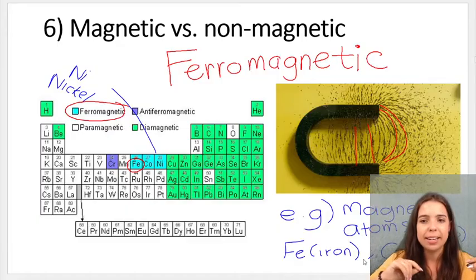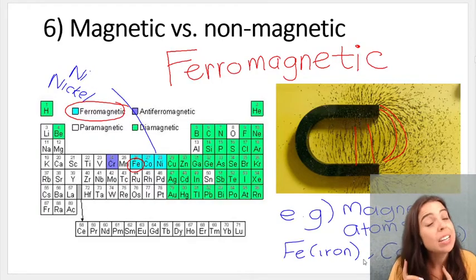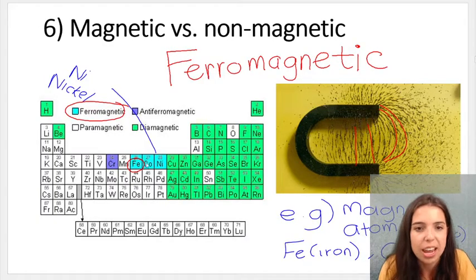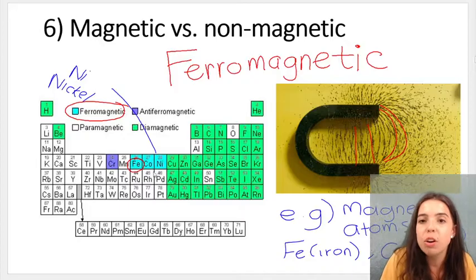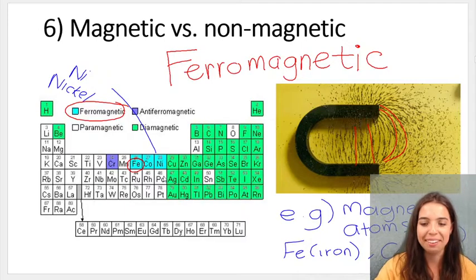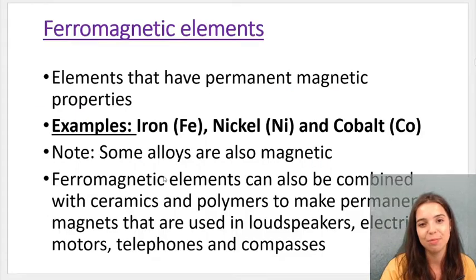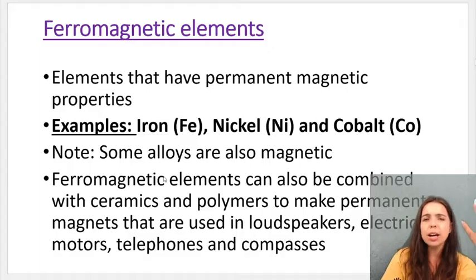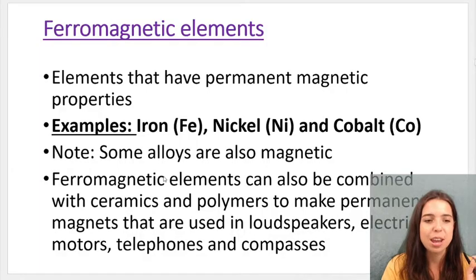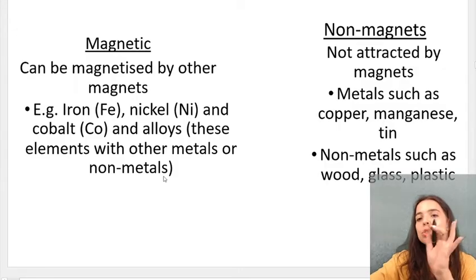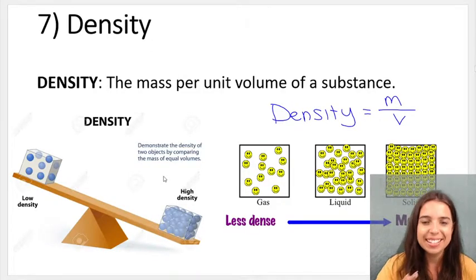Then we have magnetic versus non-magnetic materials. We get certain elements called ferromagnetic elements: iron (Fe), cobalt (Co), and nickel (Ni). These elements experience a force in the presence of another magnet and have permanent magnetic properties. Magnets have widespread uses in electronics, telephones, compasses, and motors.